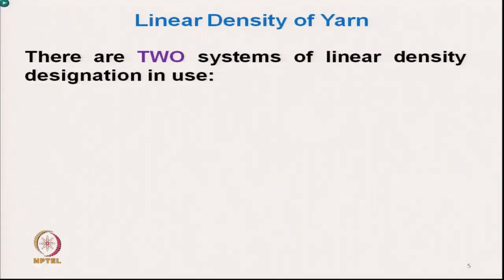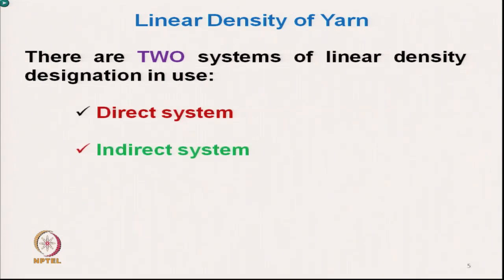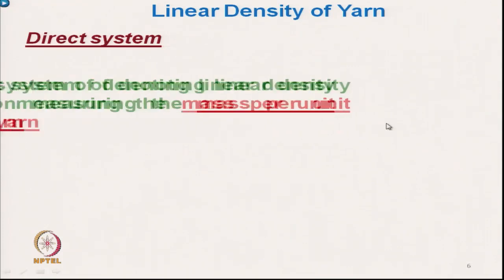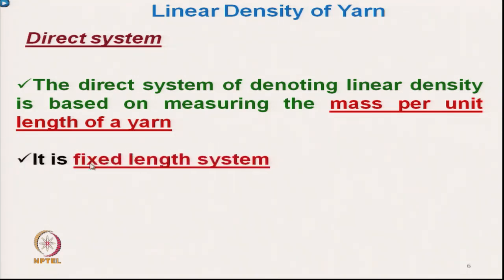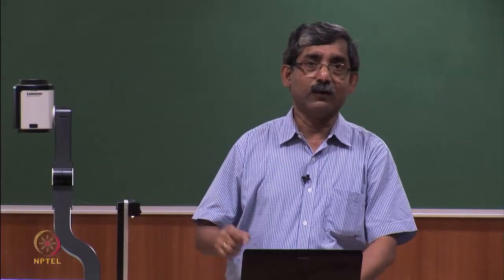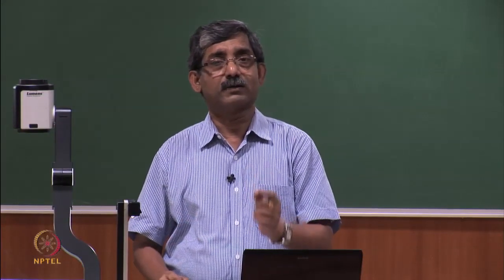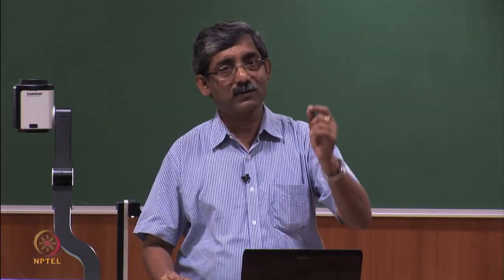There are two systems of linear density measurement: the direct system and the indirect system. The direct system is a very convenient system — it is based on measuring the mass of yarn per unit length. Mass per unit length is the direct system for measurement, and here the length unit is fixed. We take a fixed length, then measure the mass, which directly gives us the linear density in the direct system.